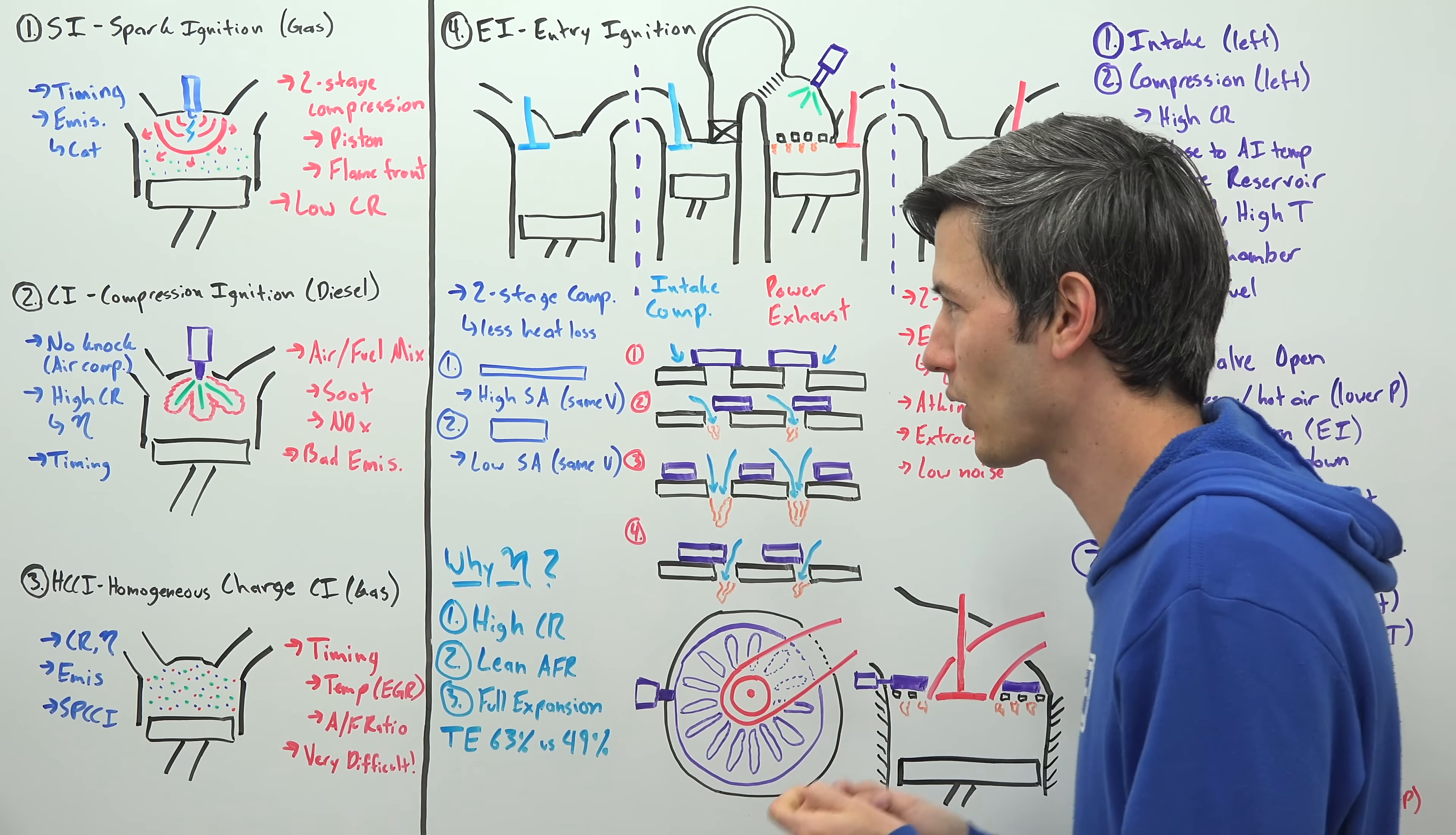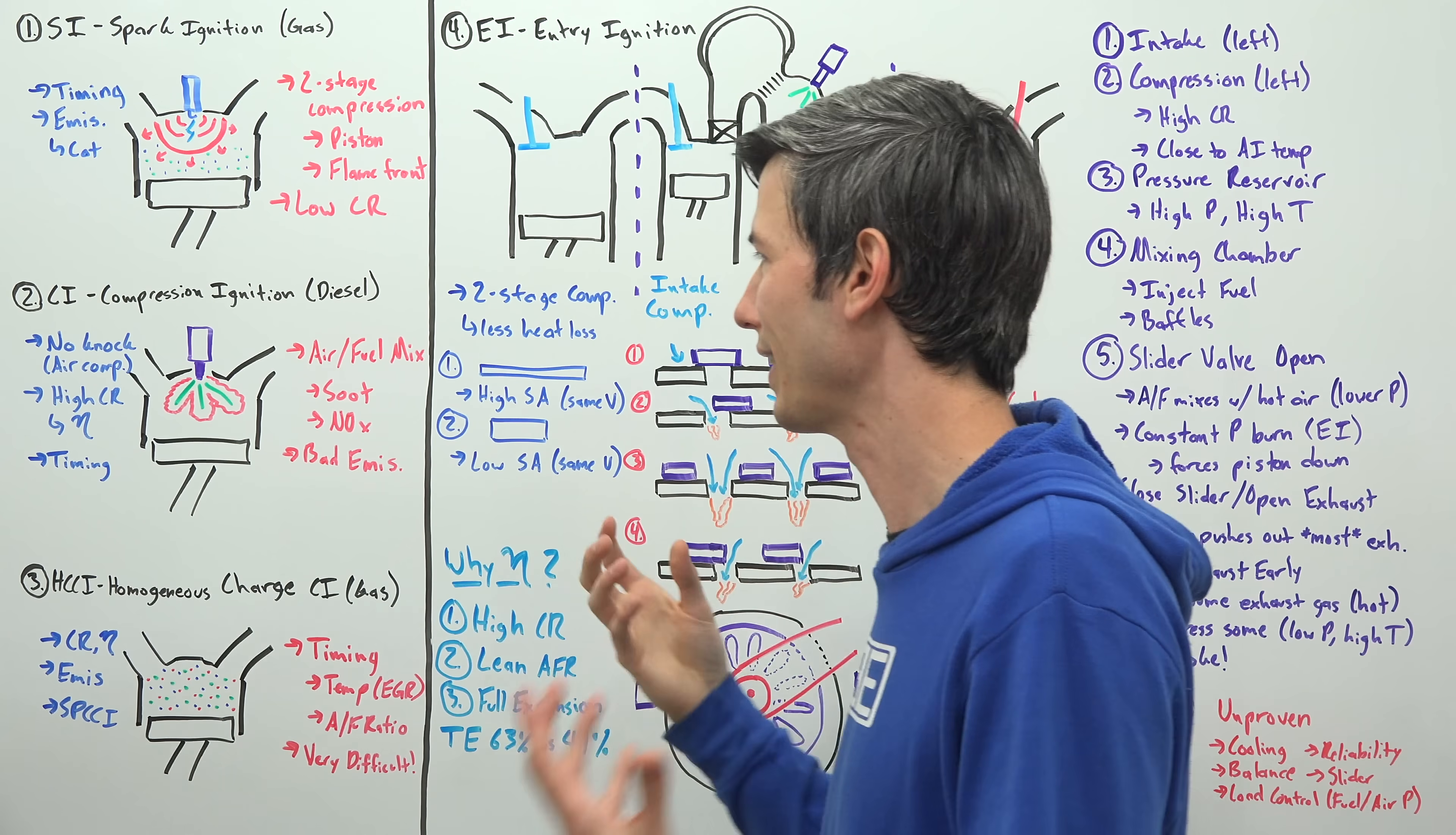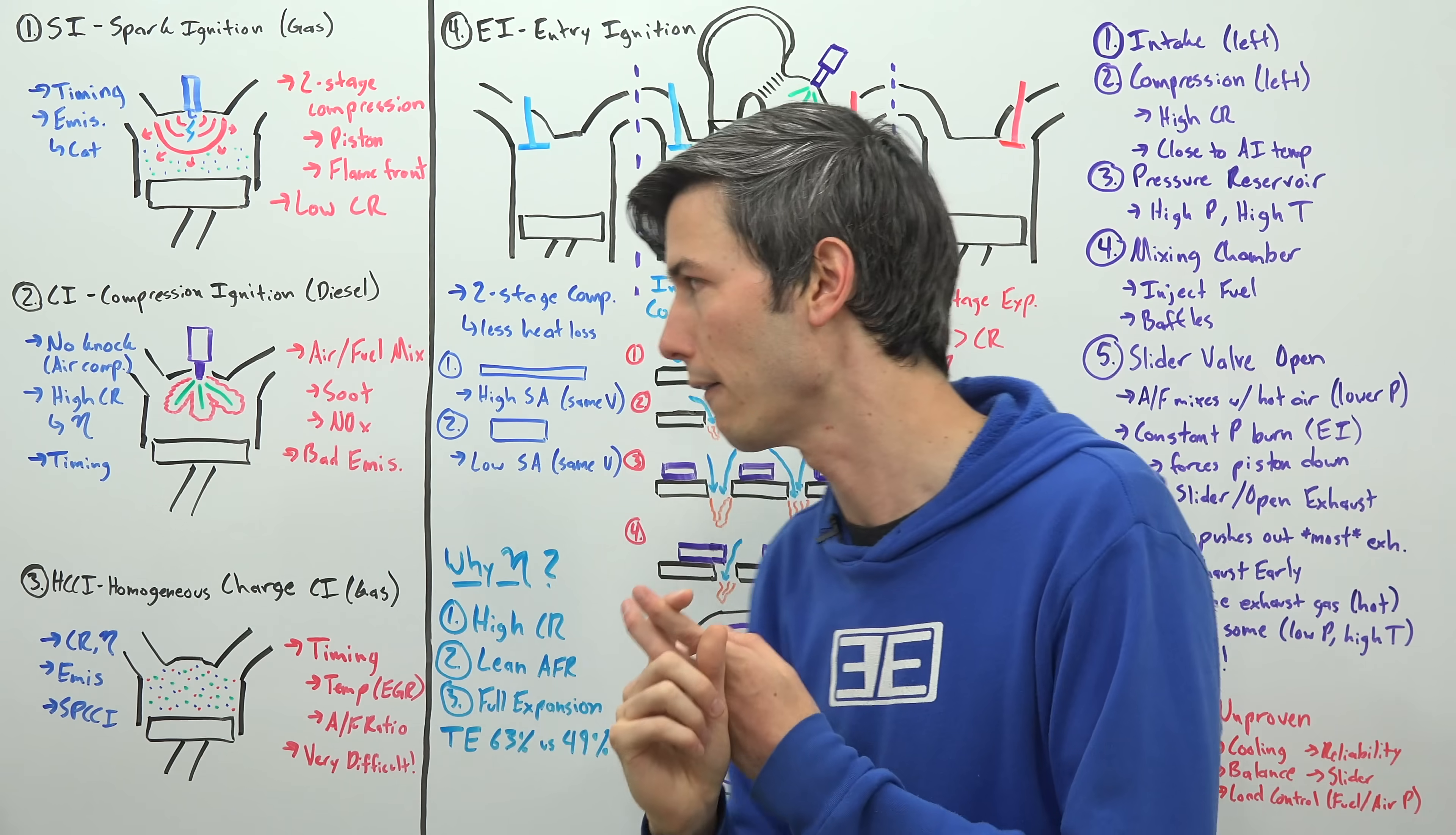Next we move on to diesel engines which have compression ignition. So we don't have to worry about knock with diesel engines because during that compression stroke, we pull in air during the intake stroke, we compress only air during the compression stroke, so we don't have to worry about an air fuel mixture auto-igniting and then we inject in the fuel and injecting in that fuel it begins to burn immediately. So we can use really high compression ratios, which means a really high efficiency.